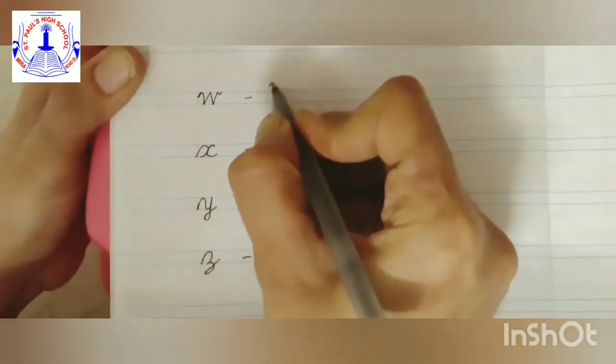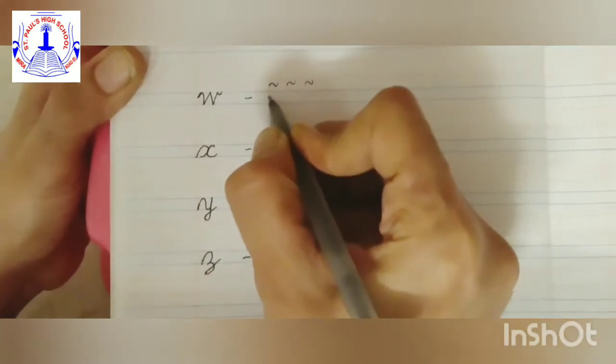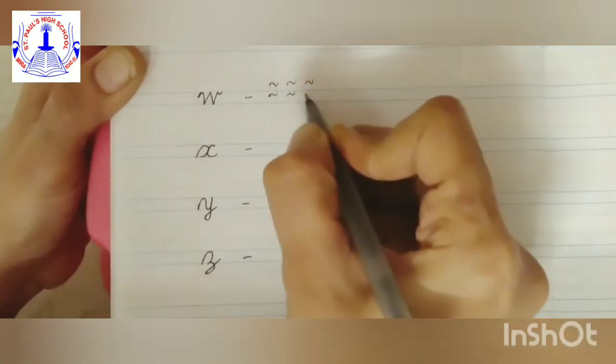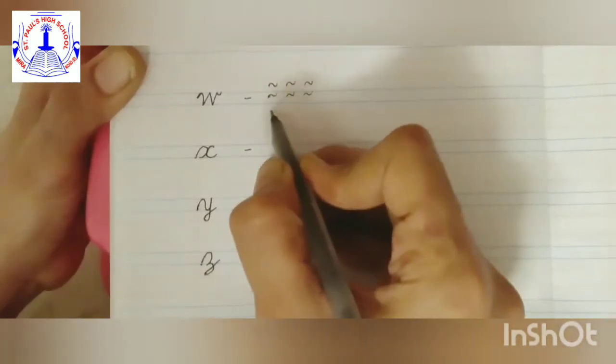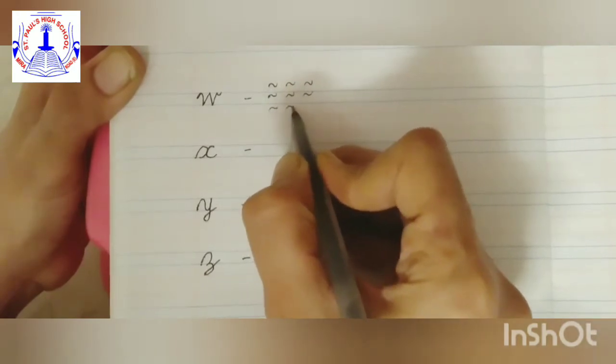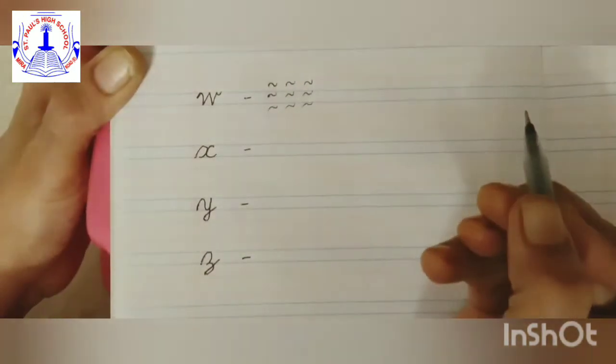We are going to draw water. W for water. Just three wavy lines in three rows. Like this. Easy children.